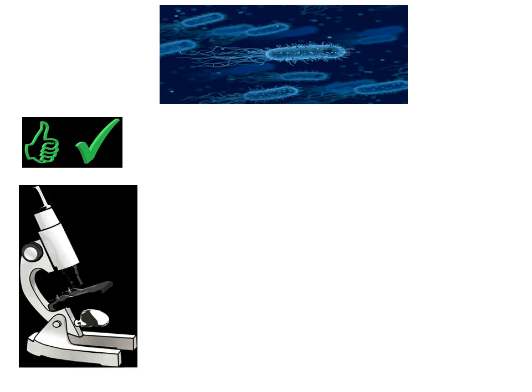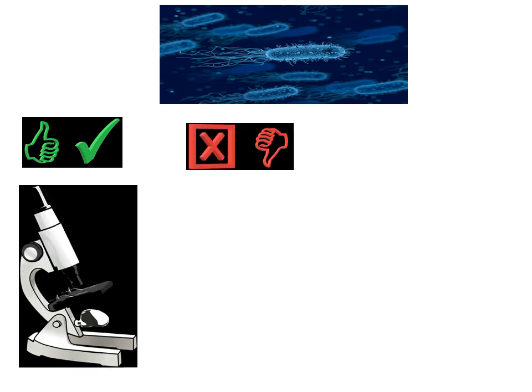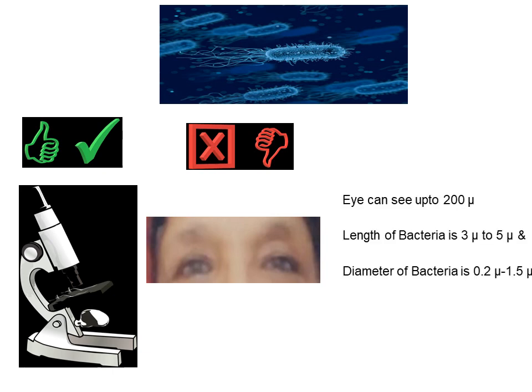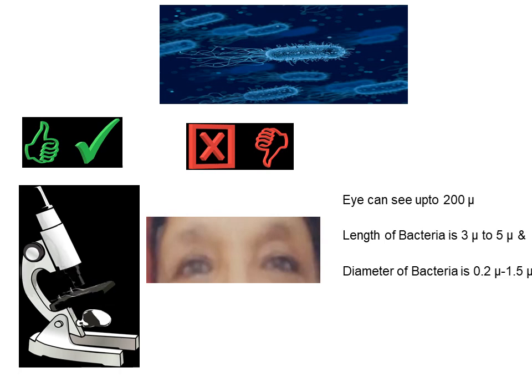Bacteria are so small that they can be seen only with the help of a microscope and cannot be seen with the naked eye. The naked eye can see up to 200 microns. The length of bacteria is generally 3 to 5 microns and the diameter is generally 0.2 to 1.5 microns. Therefore, bacteria can be seen only under a microscope.